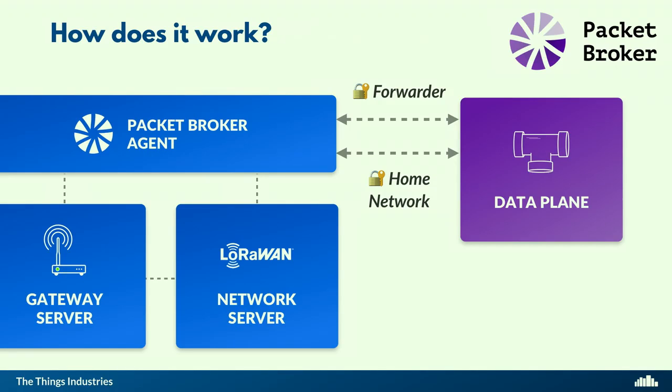The other role is home network. That is when you have devices and you can subscribe to uplink messages coming from other networks — from forwarders — and you can publish downlink messages. You can also be only a gateway server; if you only have gateways, you're just a forwarder. These are tower companies or Lacuna Space, which only have infrastructure and don't operate a network. But you can also have only network servers — virtual networks that don't own infrastructure — that go to the Packet Broker to see which members to exchange traffic with. Or you can do both.